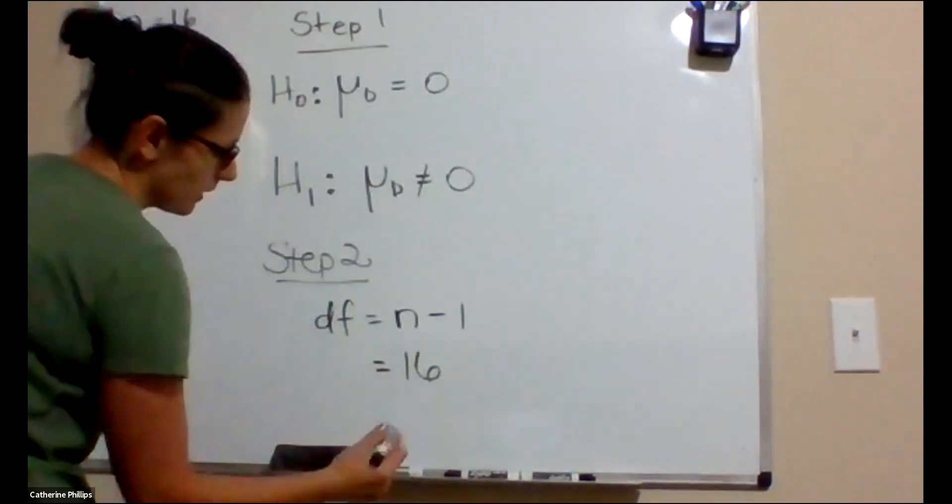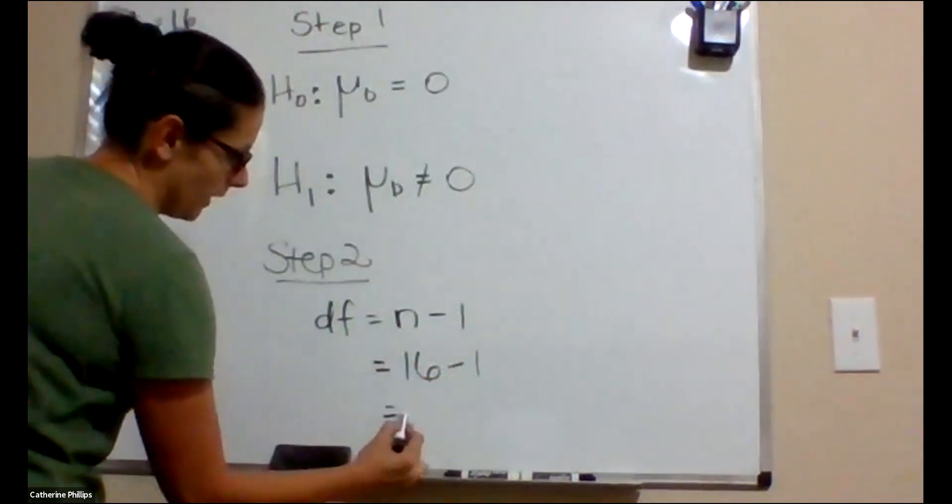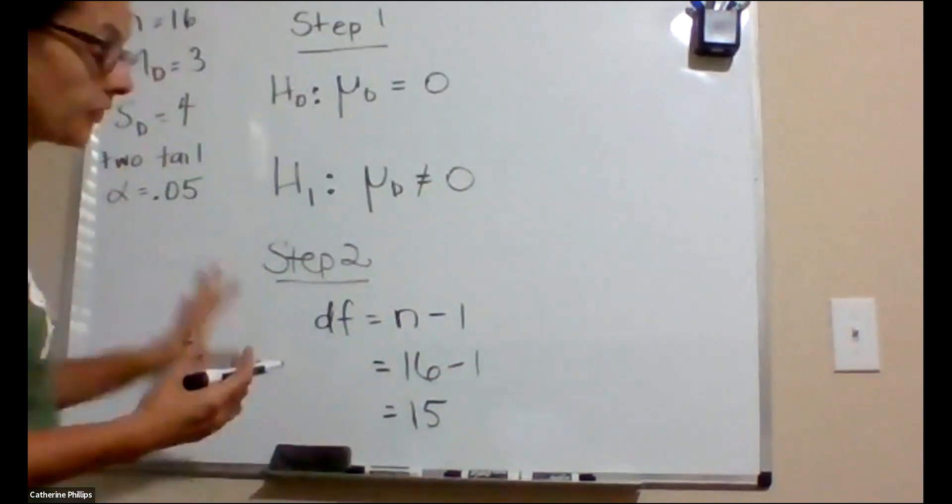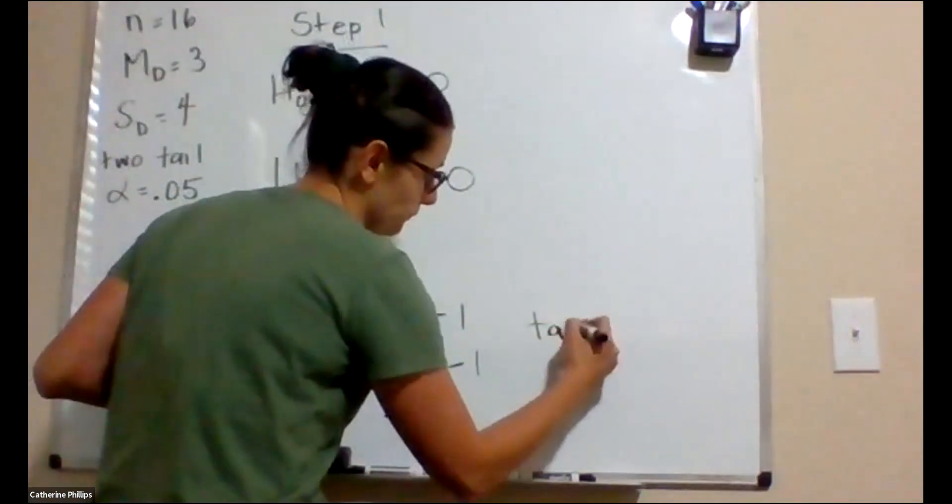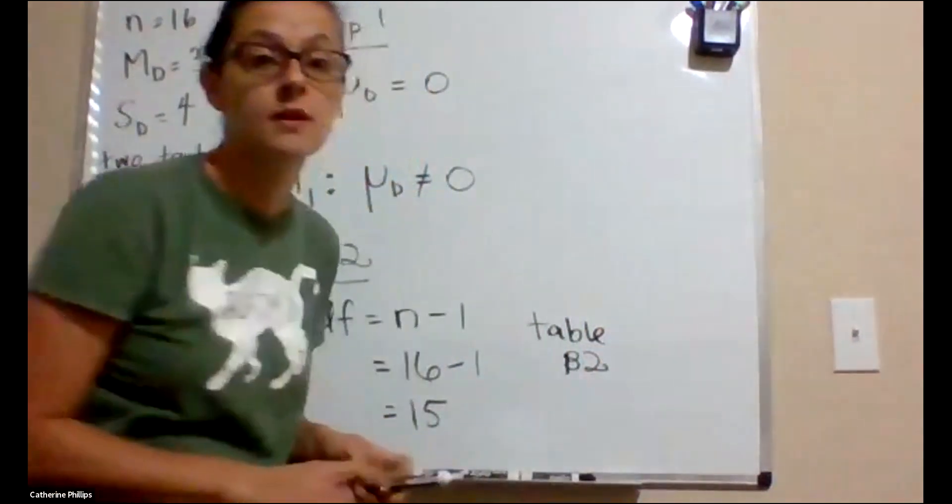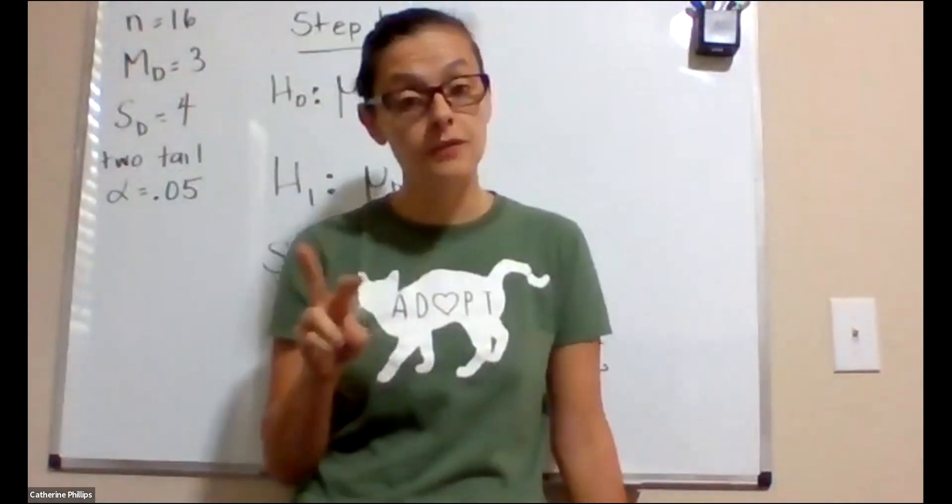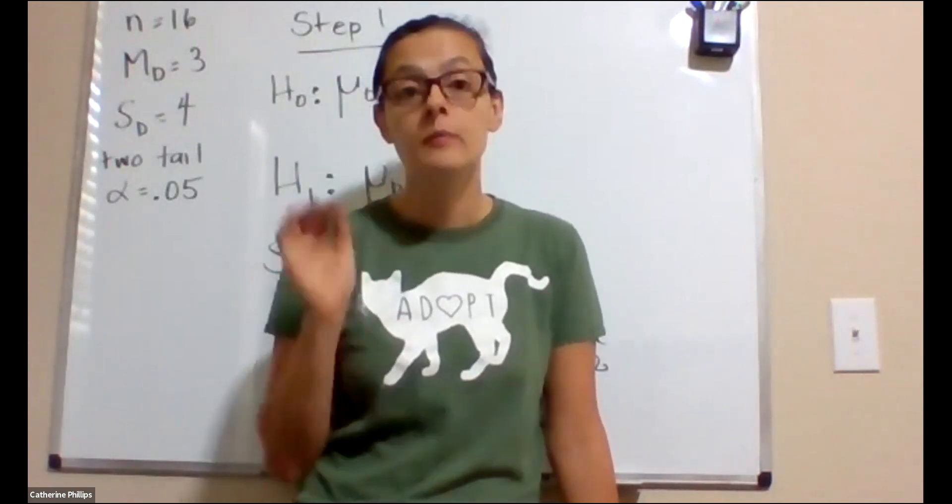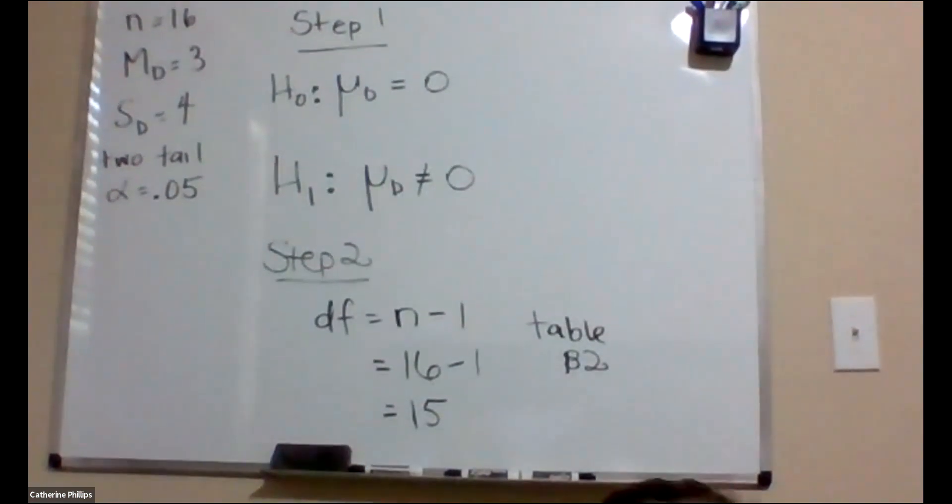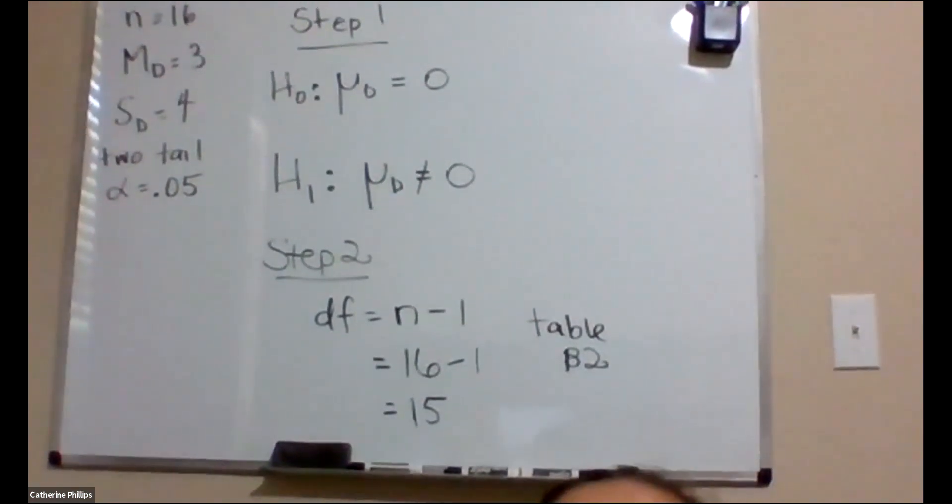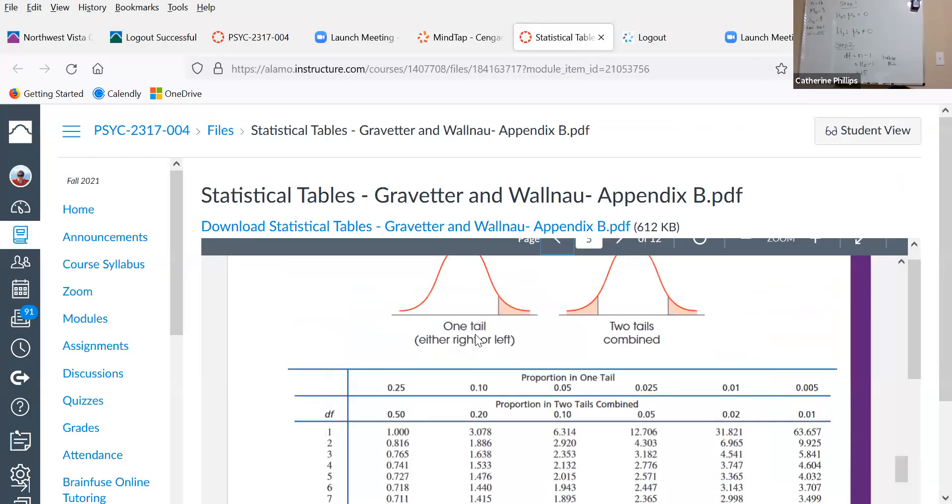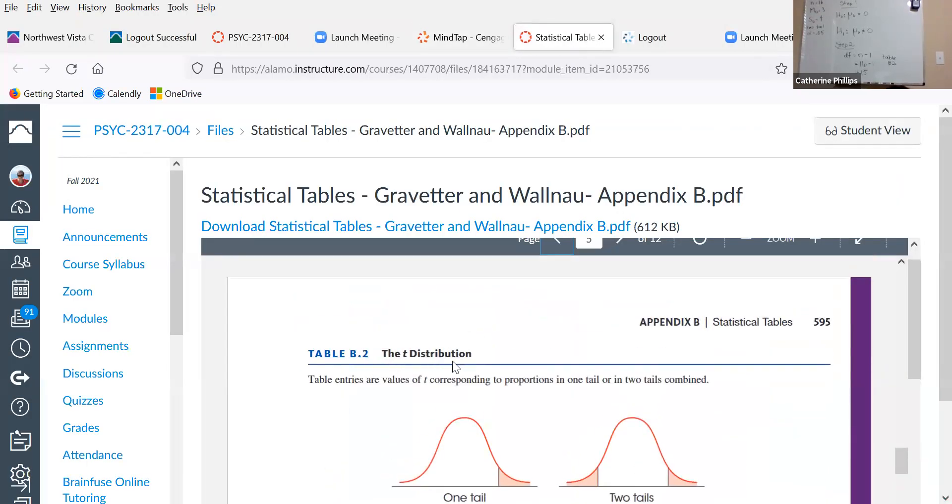We have 16 pairs of data. So we have 15 degrees of freedom. With this, we can go to table B2 and look up the values that we need. And we're going to have two values. It's going to be plus or minus some number because it's a two-tailed test. So if I go here to share my screen, I go to the statistical tables. Here, table B2, the t distribution.